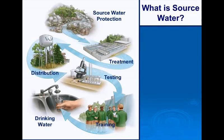Source water protection complements the efforts of drinking water treatment plant operators by eliminating or reducing sources of pollution in our lakes, rivers, and aquifers. It contributes to the health of humans and ecosystems. Protecting the sources of our drinking water is important to ensure that there is enough safe water for all of our uses, now and in the future. It is much easier to keep water clean than it is to try and clean it up afterwards.